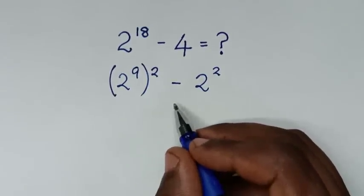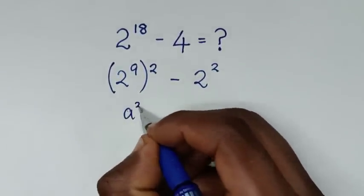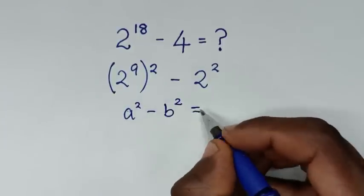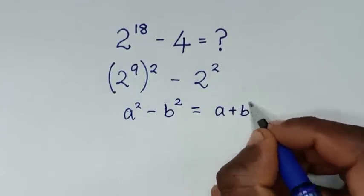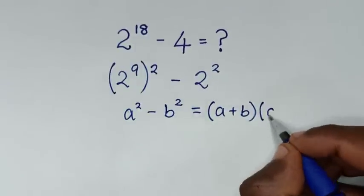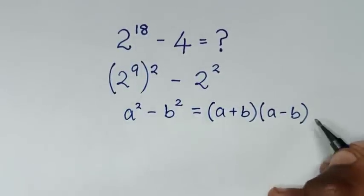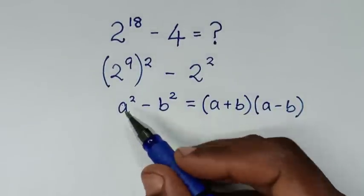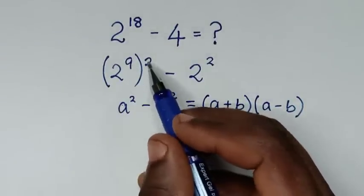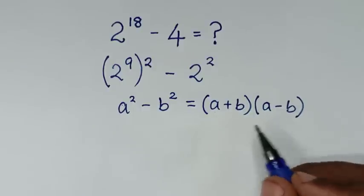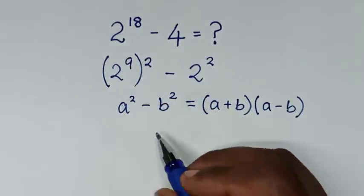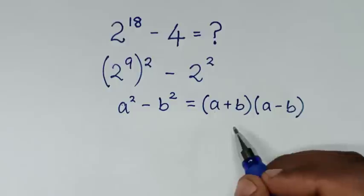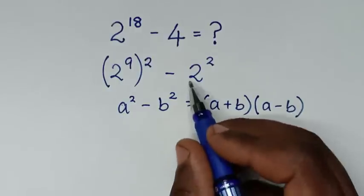So we'll apply the perfect square rule, which is: a squared minus b squared is equal to (a plus b) times (a minus b). So when we compare a squared with (2 power of 9) squared, then a is 2 power of 9. And when we compare b squared with 2 squared, then b is 2.